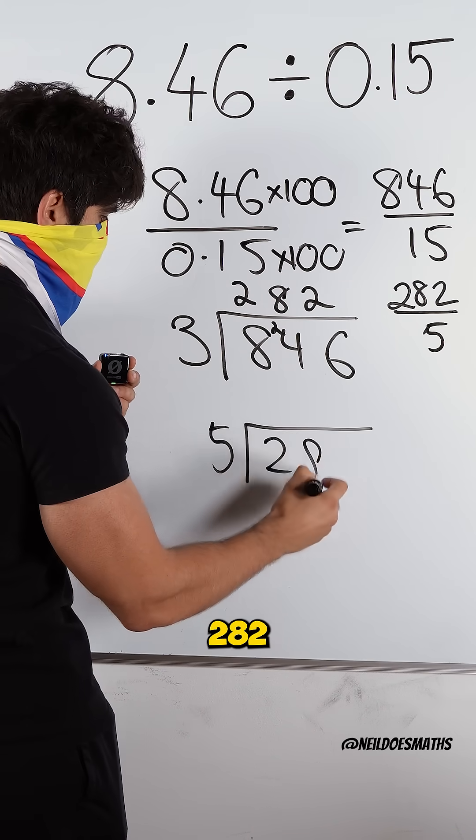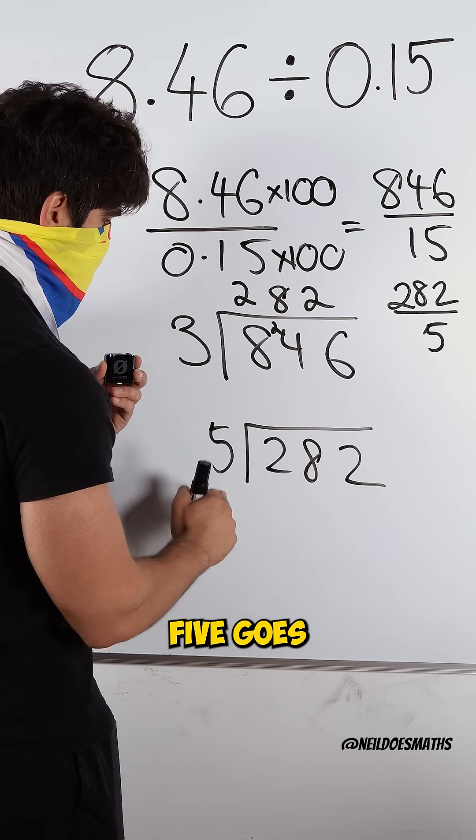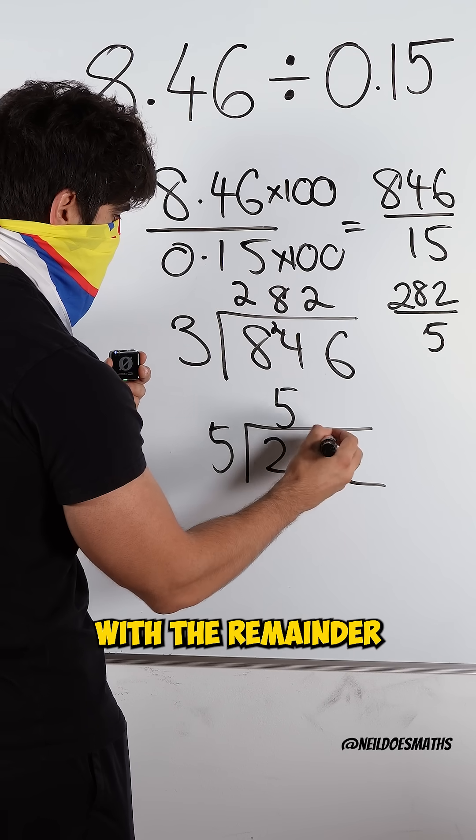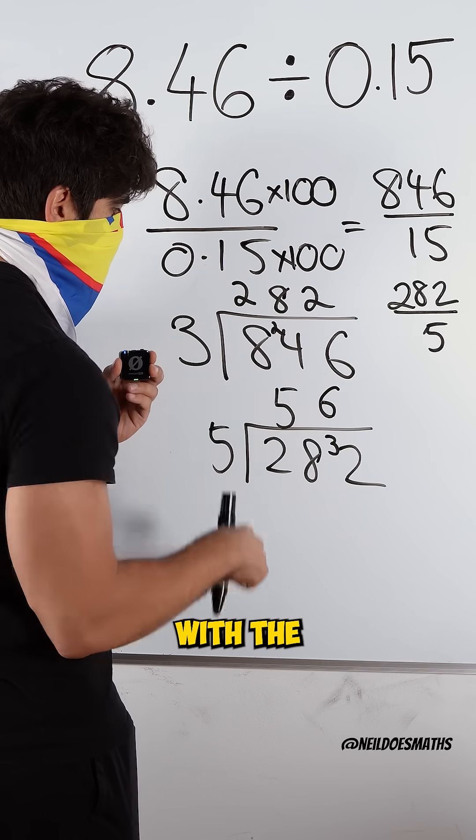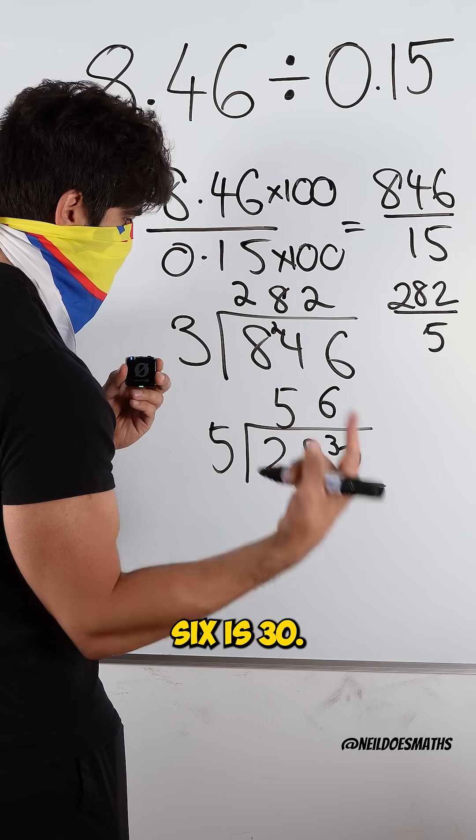All right. How many 5s go into 282? 5 does not go into 2. 5 goes into 28 five times with a remainder of 3. 5 goes into 32 six times with a remainder of 2 because 5 times 6 is 30.